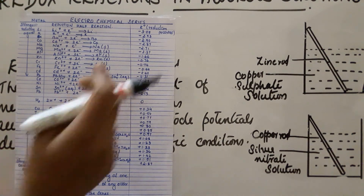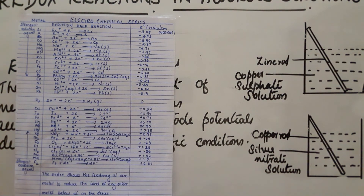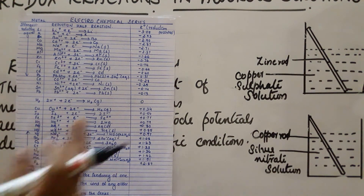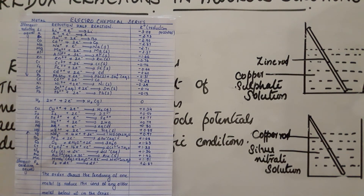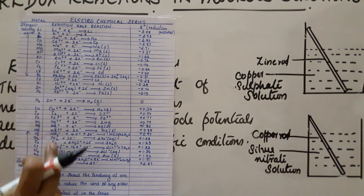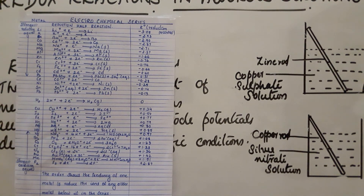Reduction potentials are given in the series. Hydrogen has zero reduction potential. Elements above hydrogen have negative reduction potentials, while those below have positive reduction potentials. From this we can determine which element has greater oxidizing power and which has greater reducing power — that is, the strongest reducing agent and the strongest oxidizing agent.